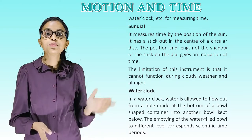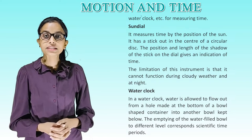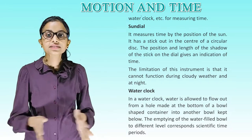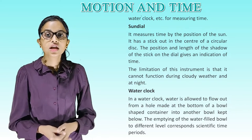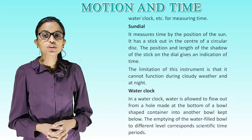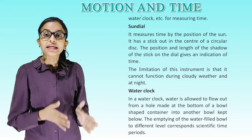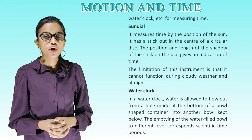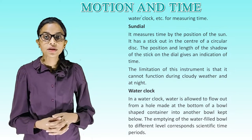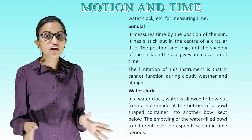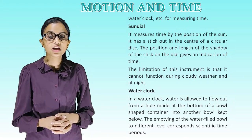Sundial. It measures time by position of the sun. It has a stake out in the center of a circular disk. The position and length of the shadow of the stick on the dial gives an indication of time. The limitation of this instrument is that it cannot function during cloudy weather and at night.